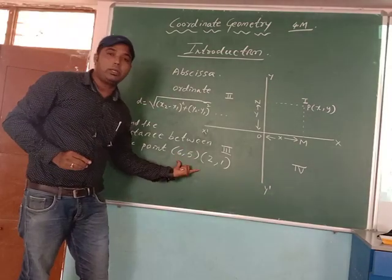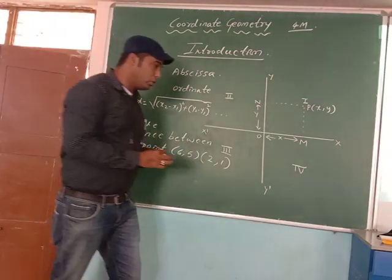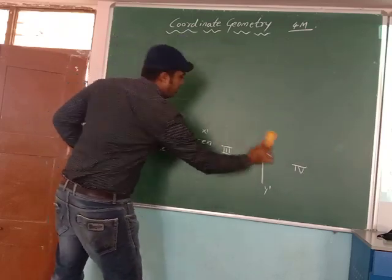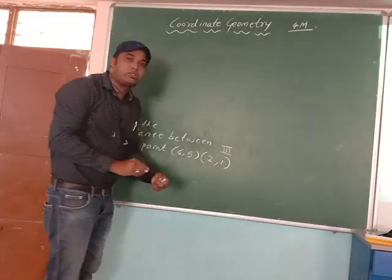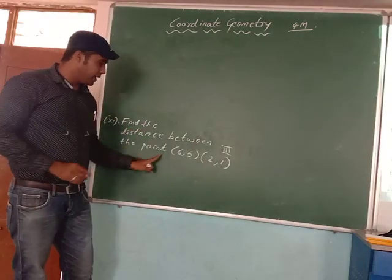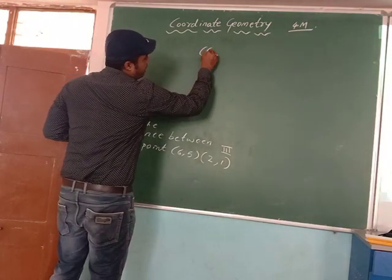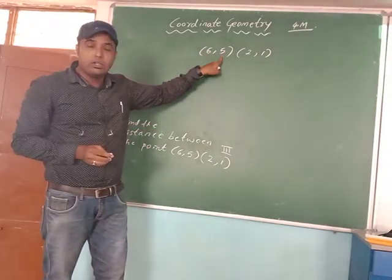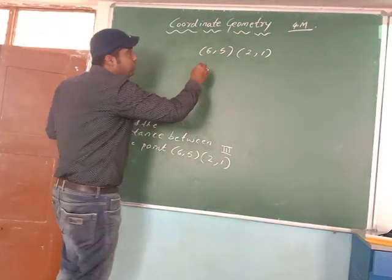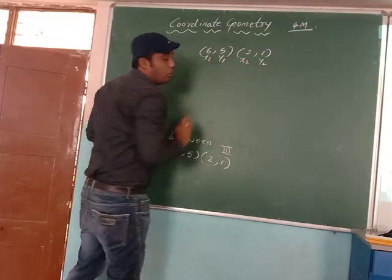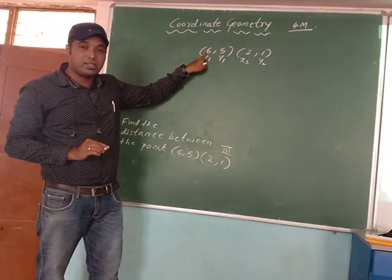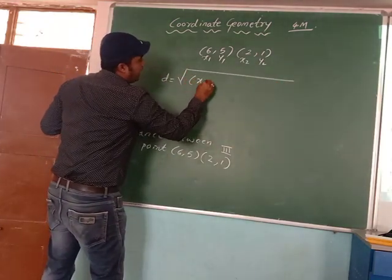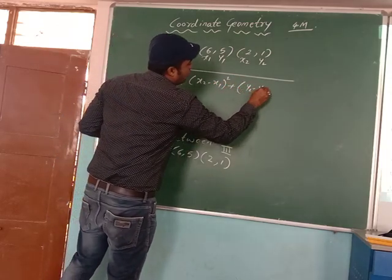Whenever these kinds of questions are there, it will usually carry 2 marks. We have to write the given points as (6, 5) and (2, 1). The first pair of points — one point will be X, another will be Y. Similarly for the second point. So we denote these as X1, Y1, X2, Y2. Always, in a coordinate point, the first value is the X-axis and the second is the Y-axis.